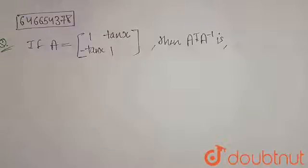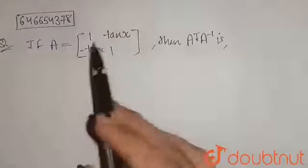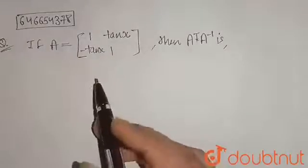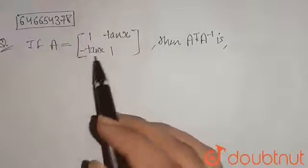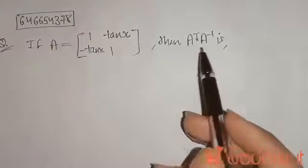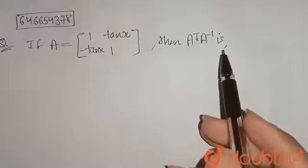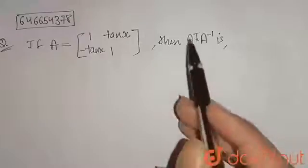It is given that if A equals a two by two matrix, so here [1, tan x; -tan x, 1], then A transpose A inverse is equals to what? Their multiplication we have to find.